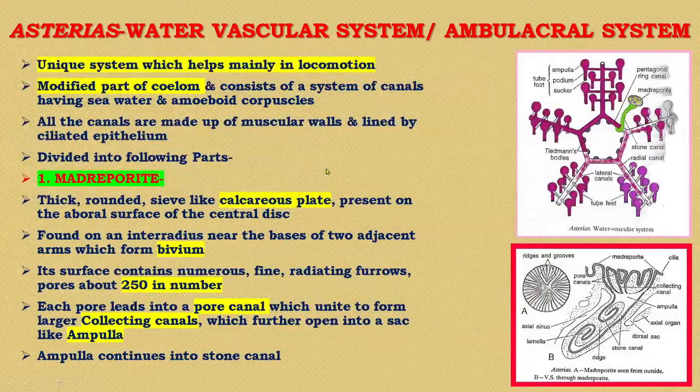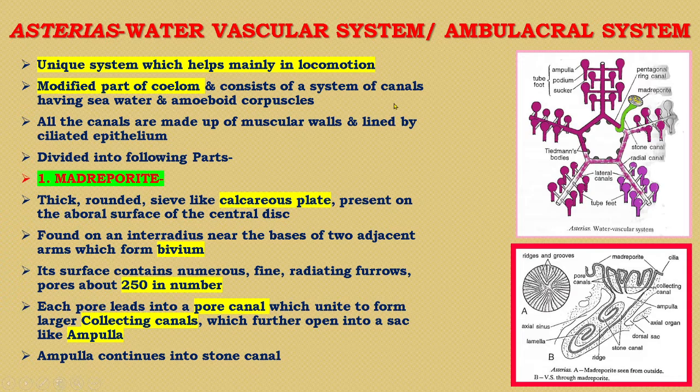The next system of Asterias is the water vascular system, also known as the ambulacral system. This system is very unique as it helps mainly in locomotion. It is a modified part of the coelom and consists of a system of canals containing seawater and amoeboid cells. All the canals are made up of muscular walls and lined by ciliated epithelium.